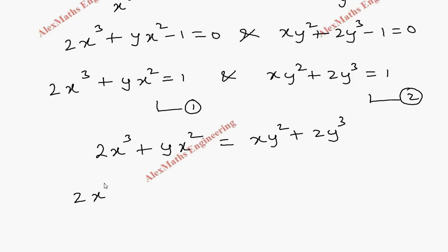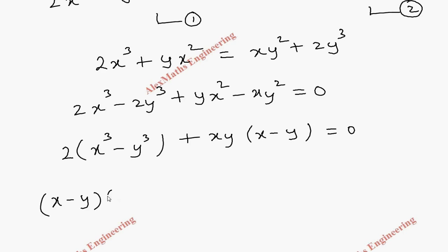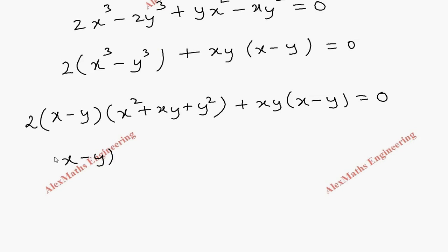Taking everything to one side: 2x³ − 2y³ + yx² − xy² = 0. Taking 2 common from the first part gives x³ − y³, and taking xy common from the second part gives x − y. Factorizing: (x − y)(x² + xy + y²) · 2 + xy(x − y) = 0.